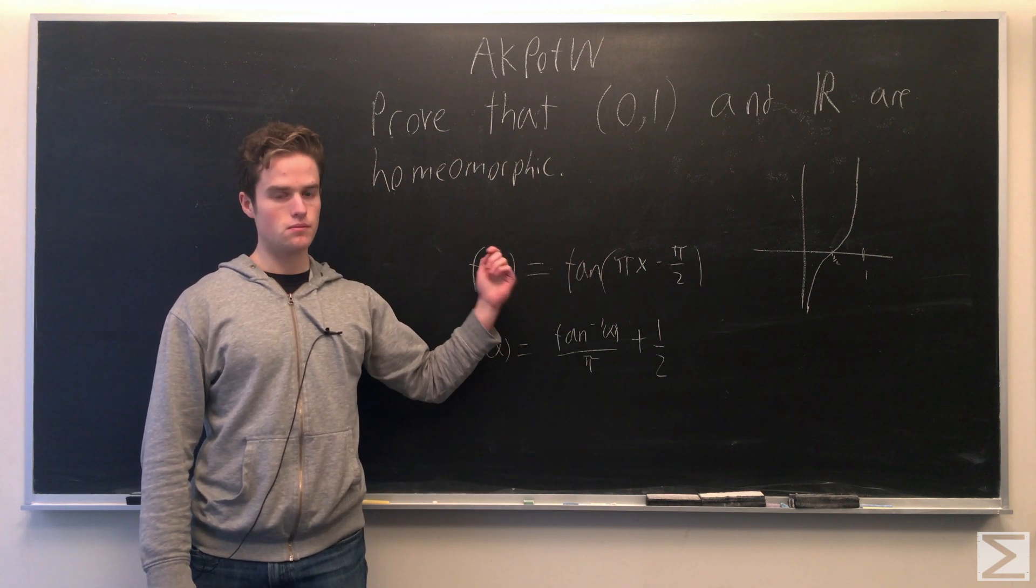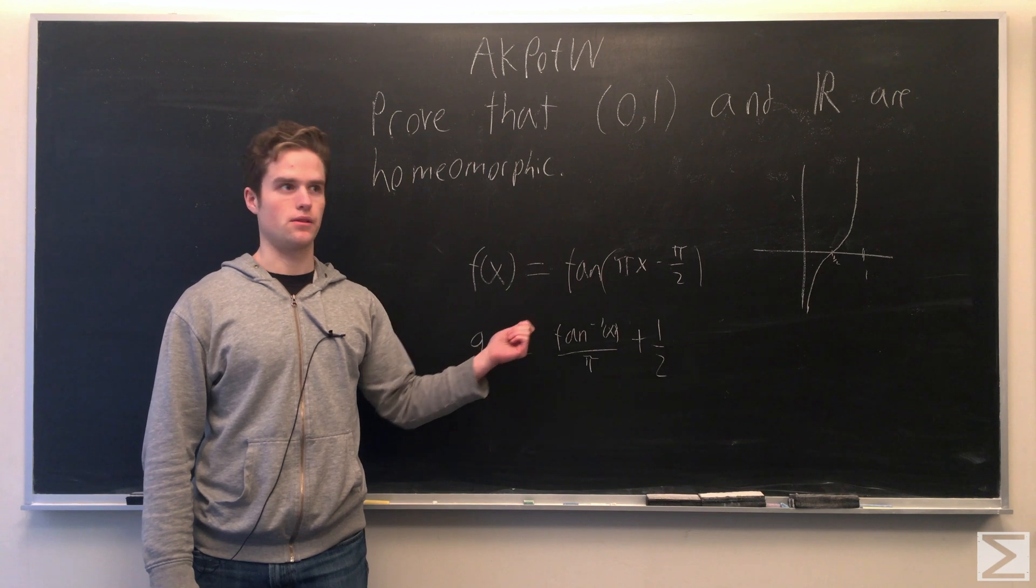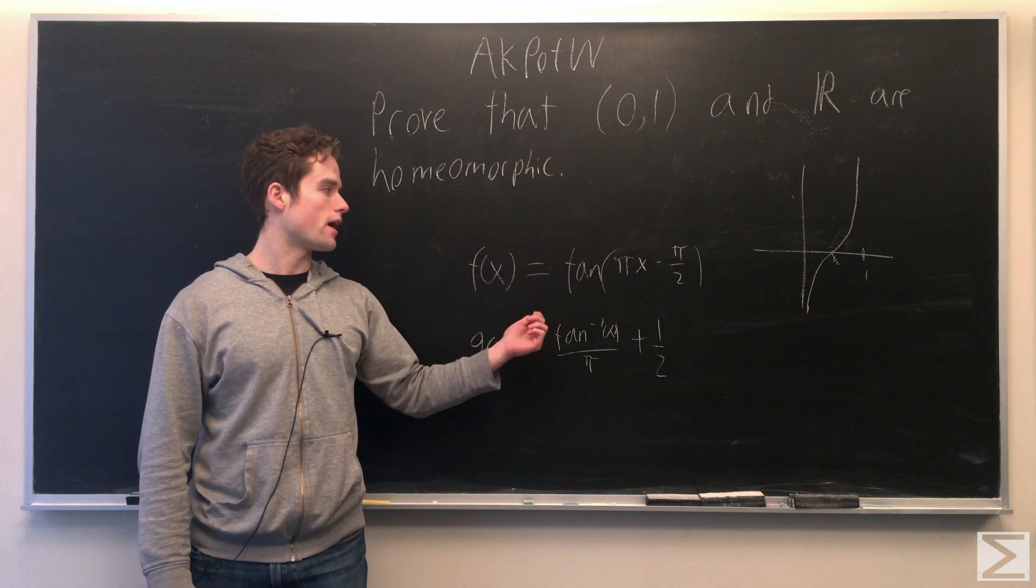This is injective. If you take the derivative of this, you'll get π over cosine squared of (πx - π/2).